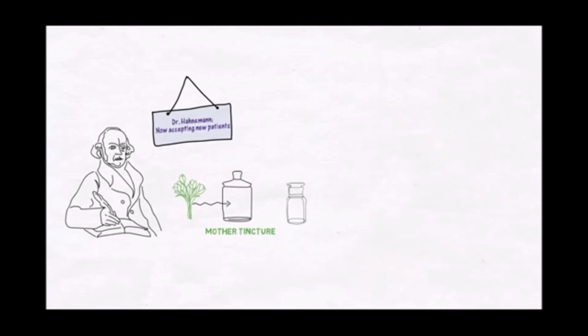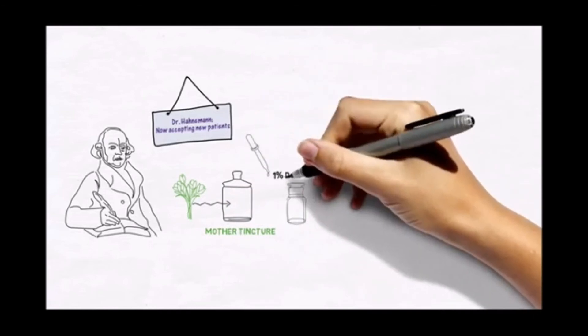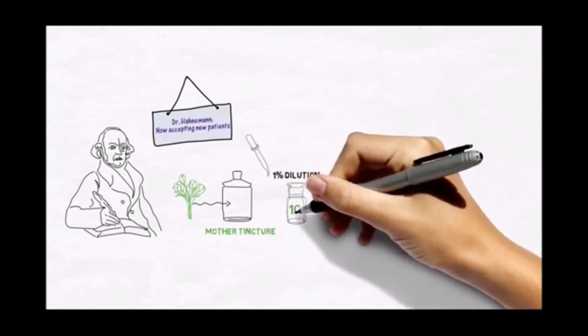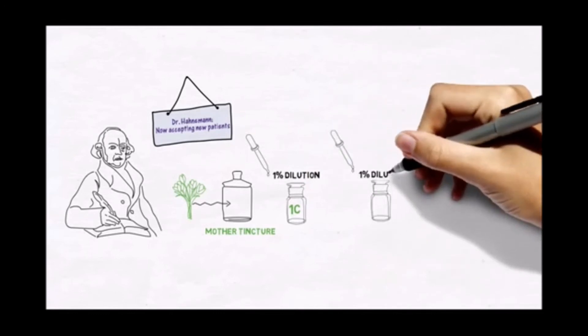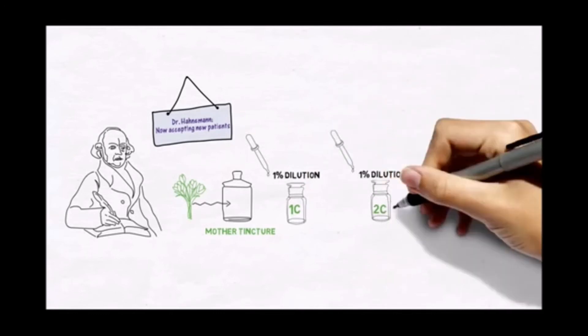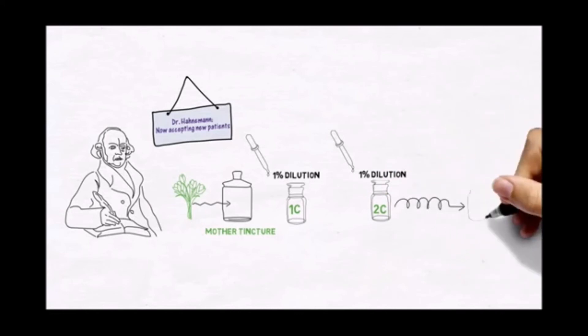This was called 1C. Then he diluted the 1C 100 more times and shook it to get 2C. He continued to repeat this process until he reached 30C. And he did this for every drug he worked on.